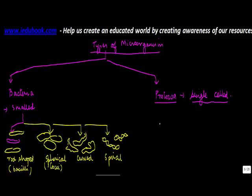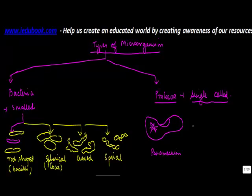It could be something like this shape, which is known as paramecium — it would have some kind of cilia. Or something like an amoeba, which keeps on changing its shape.